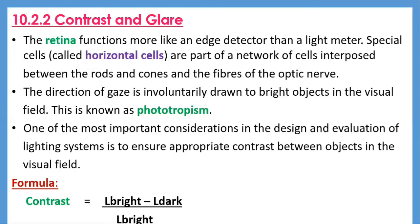The direction of gaze is involuntarily drawn to bright objects in the visual field — this is known as phototropism. Jewelry shops often display their wares on black velvet cloth under bright lights to obtain maximum contrast, intending to stimulate a phototropic response in passers-by. One of the most important considerations in lighting design is ensuring appropriate contrast between objects in the visual field. The luminance contrast between two surfaces is given by the difference between their luminances expressed as a percentage of the brighter. Note that contrast does not depend on the absolute brightness of the surfaces.